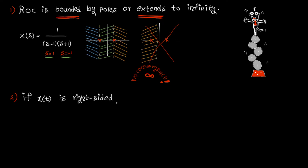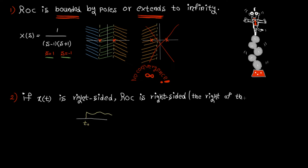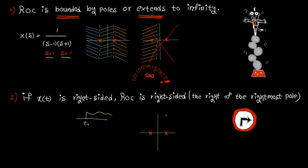Rule number two: if x(t) is right-sided — meaning the signal starts from an arbitrary time t-naught and goes to infinity — then the ROC is right-sided, meaning it lies to the right of the rightmost pole. Using the previous example, after drawing vertical lines on the poles, the ROC extends to the right of the rightmost pole.